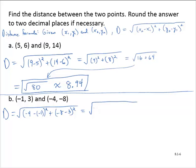So that's the square root... Now negative 4 minus negative 1 is negative 4 add 1, so that's (-3)². And negative 8 minus 3 is (-11)².